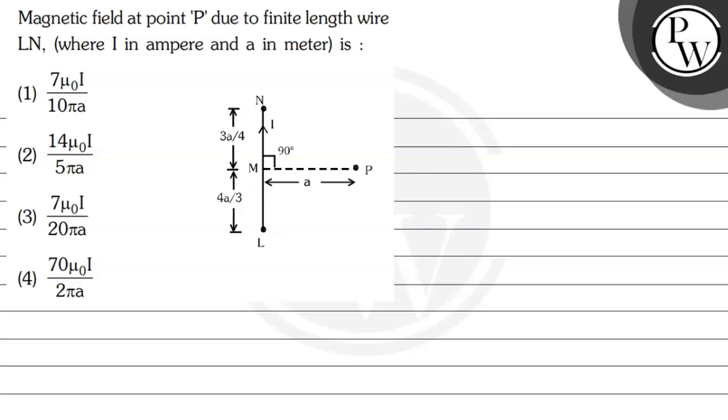Hello, let us read the question first. Magnetic field at point P due to finite length wire LN, where I is in ampere and A is in meter. Well, the key concept involved in this problem...